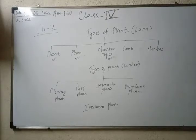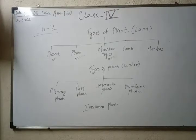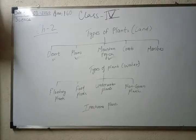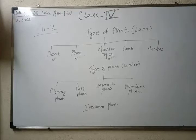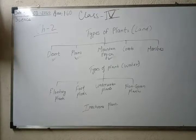Before starting, let's have a quick revision. On the basis of adaptation, different types of plants are found in different types of regions. The types of plants found on land are: desert area region plants, plains region plants, mountain region plants, coastal region plants, and marshes region plants. Some plants are also found in water — four types: floating plants, fixed plants, underwater plants, and non-green plants.